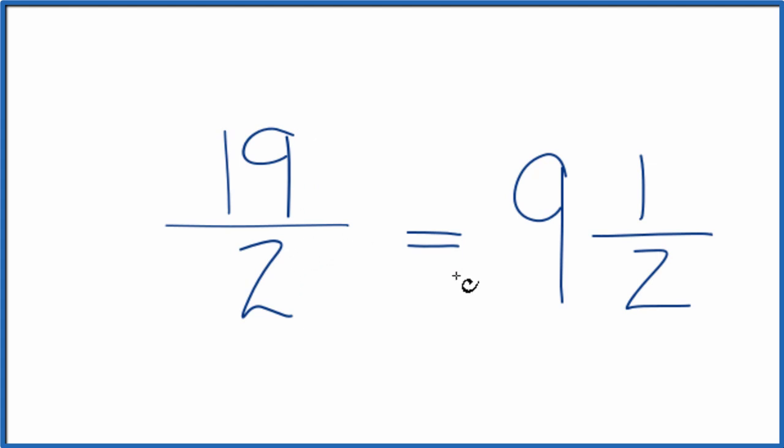So the fraction 19 over 2, that's the same as the mixed number 9 and 1 half. And you could check that. 2 times 9 is 18, plus 1. That's our 19 and the 2. Just brought that across.